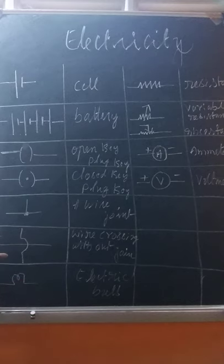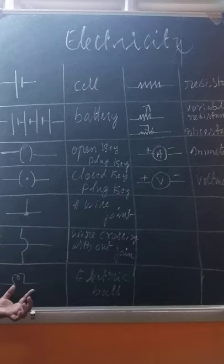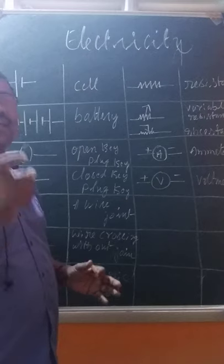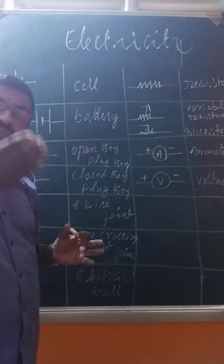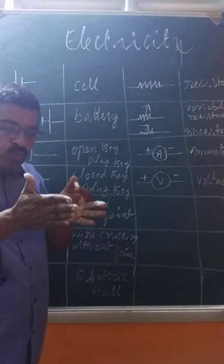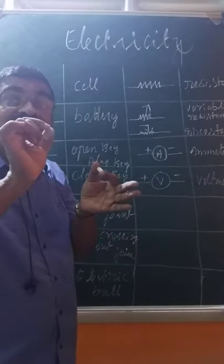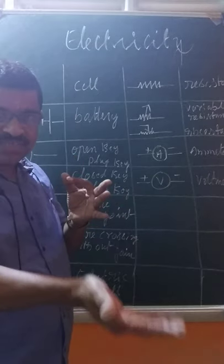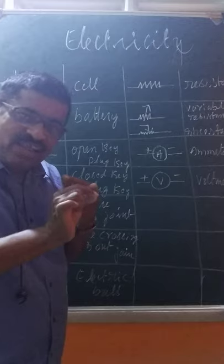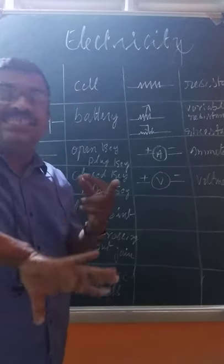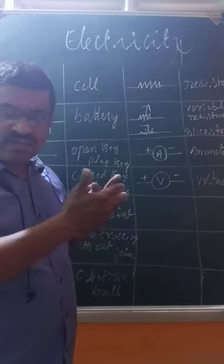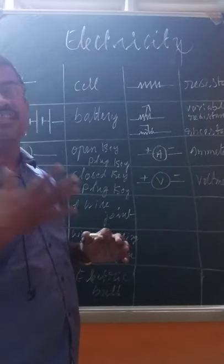This is the electric bulb symbol — you can draw the bulb picture or use the symbol. If there are more bulbs, draw more symbols. This is called a resistor — it is a material which opposes the flow of current. It is a material which has resistance.